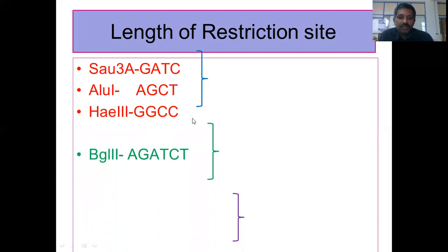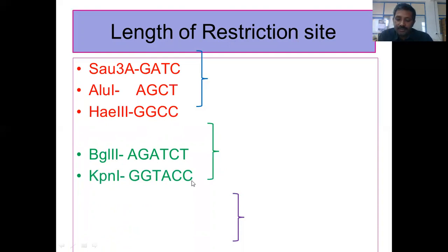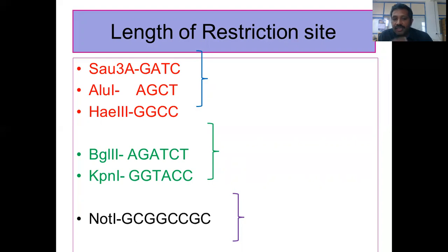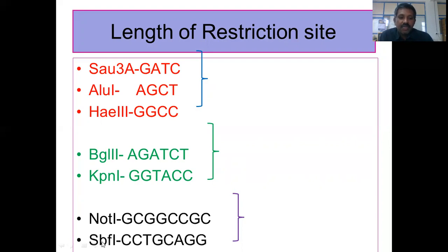BglII has the site AGATCT — a hexanucleotide. KpnI has GGTACC, also four nucleotides. EcoRI, BamHI, SmaI, and HindIII all fall under the hexanucleotide category. There is also an octonucleotide category where the restriction site is eight bases long; for example, NotI has GCGGCCGC, and SbfI is also an octonucleotide.